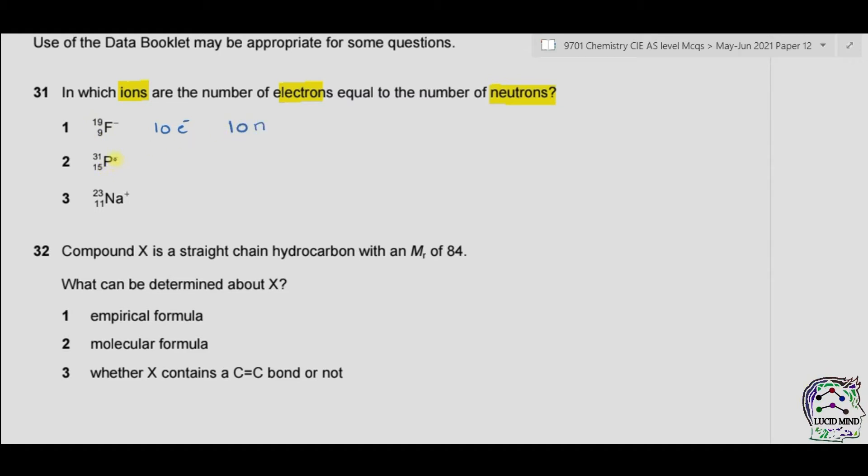Similarly, in phosphorus, we have negative 1 charge, so 15 protons plus 1 electron, it becomes 16 electrons. And 31 minus 15 becomes 16 neutrons.